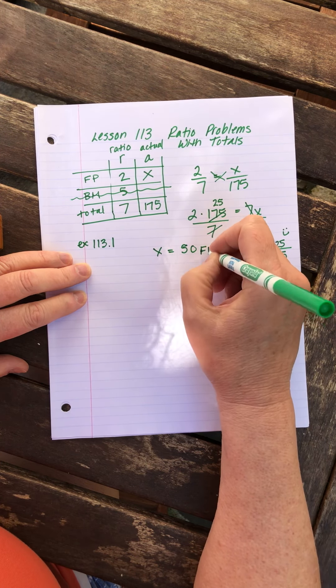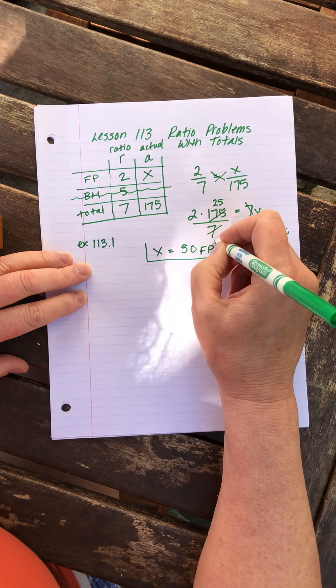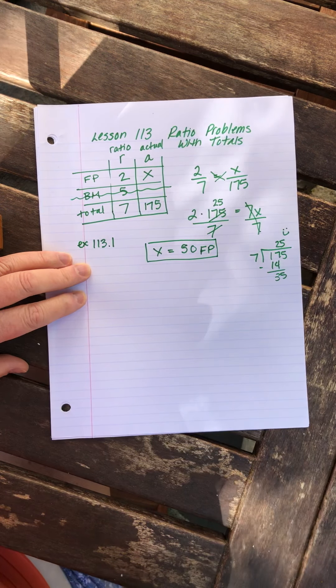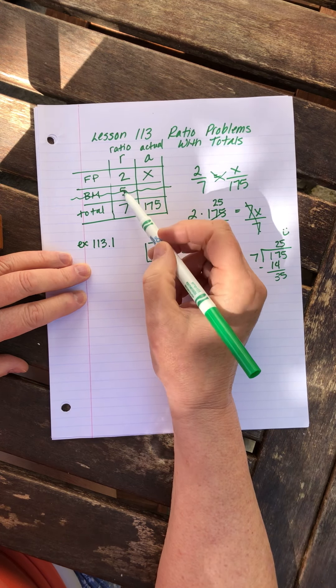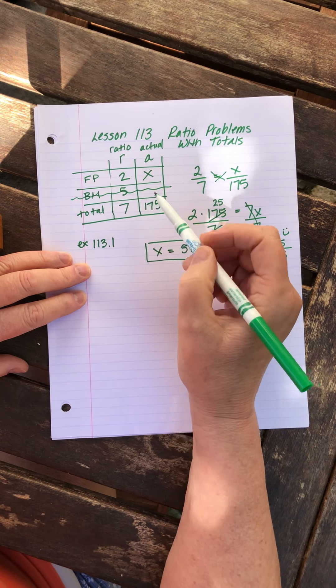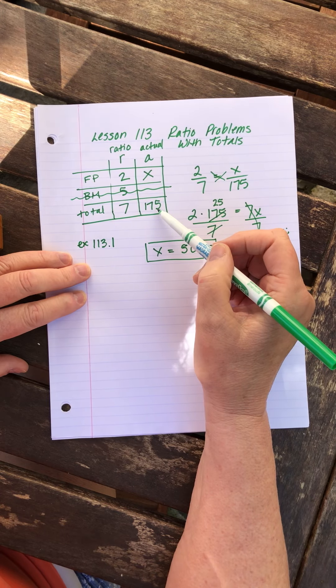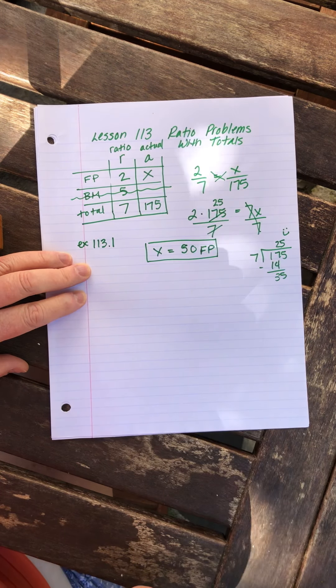So now I've got X equals 2 times 25, that's 50 football players. So that means that if the ratio of football players to band members is 2 to 5, and we've got 175 kids in all, 50 of them must be football players.